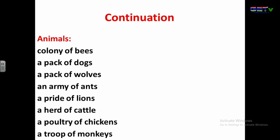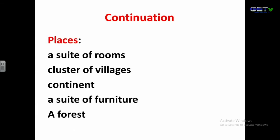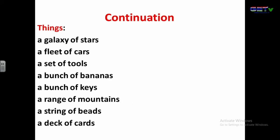Collective nouns for animals: colony of bees, a pack of dogs, a pack of wolves, an army of ants, a pride of lions, a herd of cattle, a poultry of chickens, a troop of monkeys. For places: suite of rooms, cluster of villages, continent, forest, etc. For things: a fleet of cars, a set of tools, a bunch of bananas, a bunch of keys, a range of mountains, a string of beads, a deck of cards.